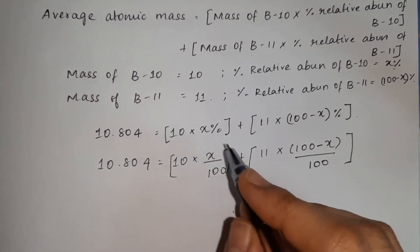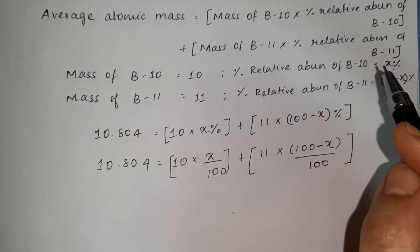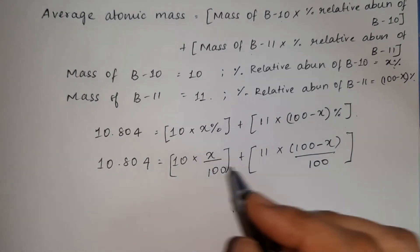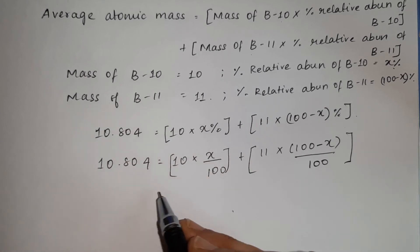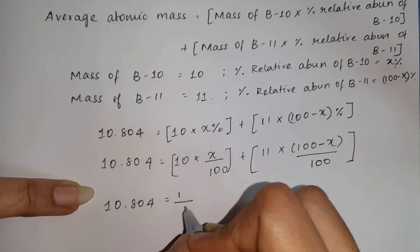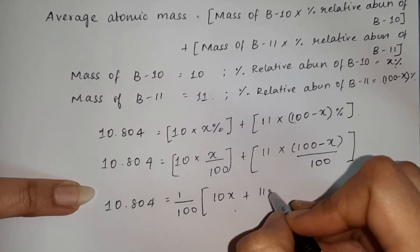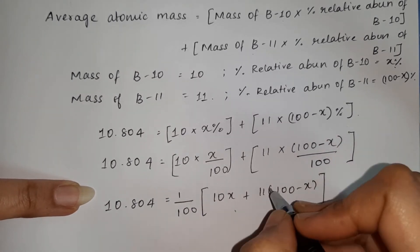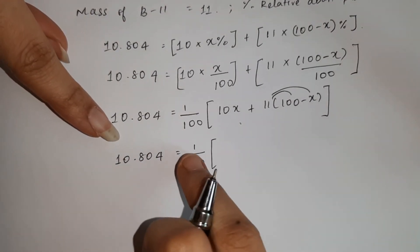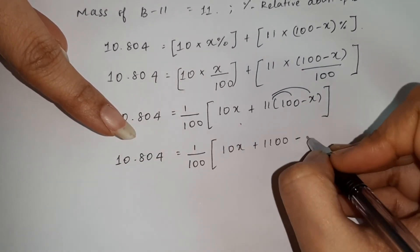Taking the equation, x percentage is for Boron-10. The total is 100, so the percentage is divided by 100. Taking 1 by 100 as common: 10.804 = (1/100) × (10x + 11(100 − x)). Expanding: 10.804 × 100 = 10x + 1100 − 11x.